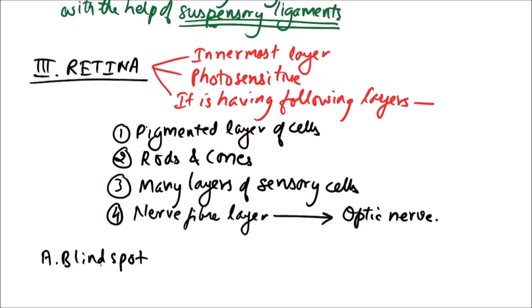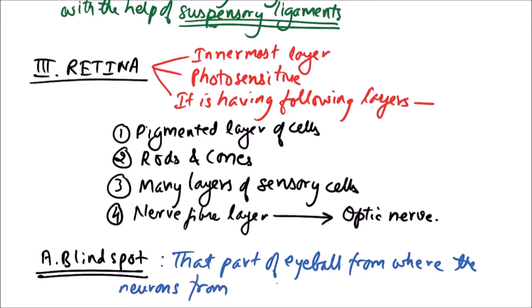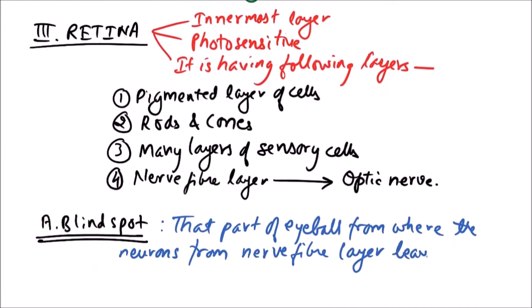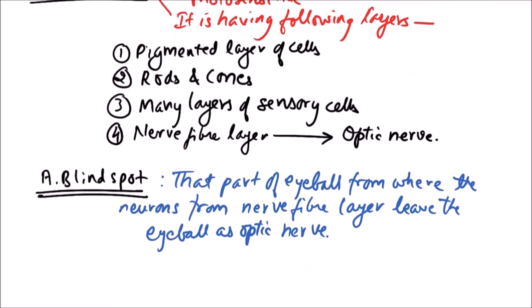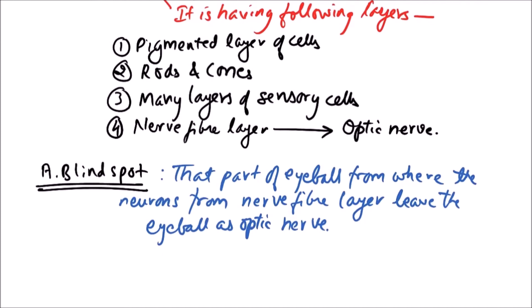Blind spot: this blind spot is that part of eyeball, it represents that part of eyeball from where the neurons from nerve fiber layer, the innermost layer of retina, leave the eyeball as optic nerve. There are no rods and cones in this area, so it is not meant for vision, but it is just outlet to the optic nerve.